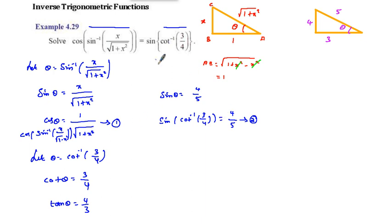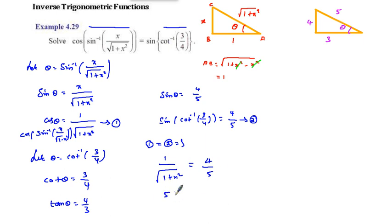Comparing equation 1 and equation 2, set them equal: 1 divided by square root of 1 plus x squared equals 4 by 5. Cross-multiplying gives 1 times 5 equals 4 times square root of 1 plus x squared, so 5 equals 4 times square root of 1 plus x squared. Squaring both sides: 25 equals 16 times (1 plus x squared).